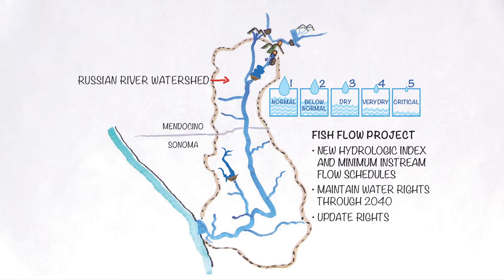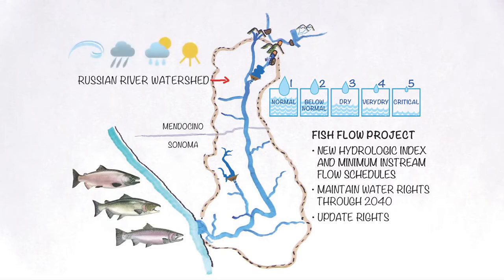The fish flow project would improve habitat for threatened and endangered salmon and improve water supply reliability for people and fish.